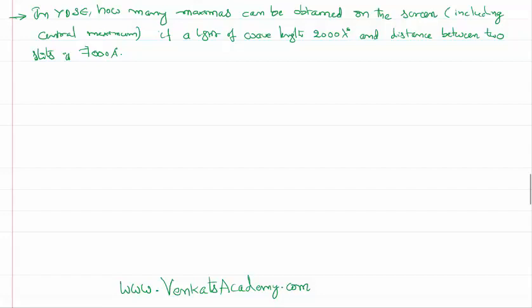Hello everyone, welcome to this video lesson. In this video lesson we are solving a problem in Young's double slit experiment. Let me read out the problem: How many maximas can be obtained on the screen including central maximum if a light of wavelength 2000 angstrom is used and the distance between the two slits is 7000 angstrom?